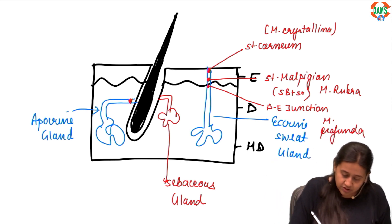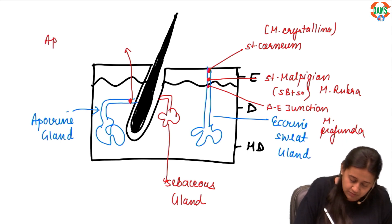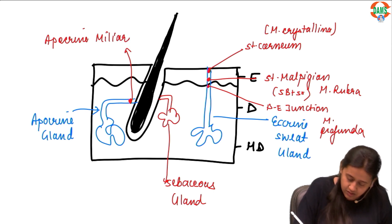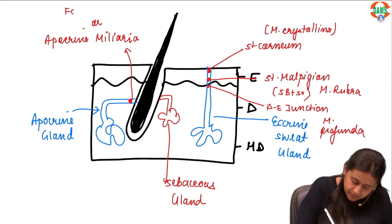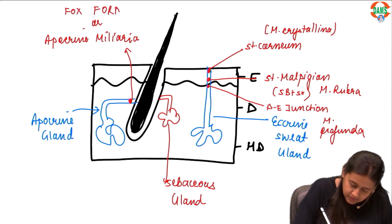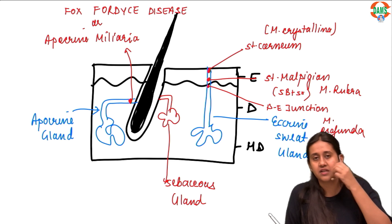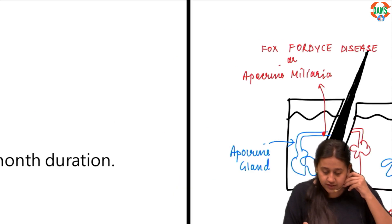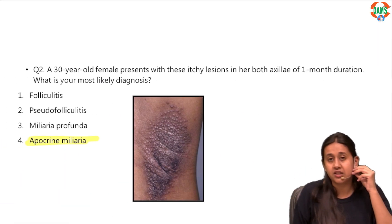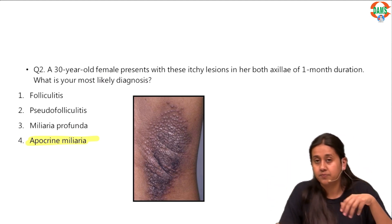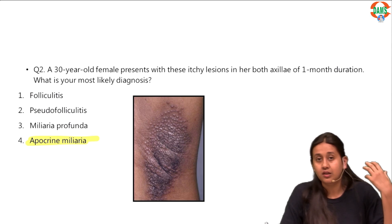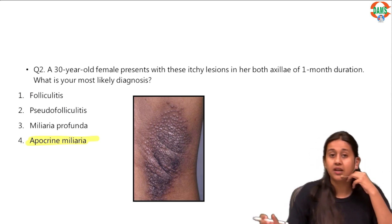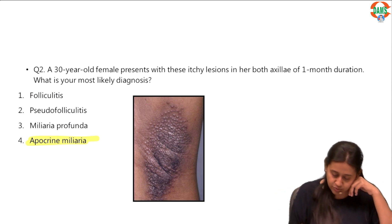The obstruction which occurs in the apocrine gland is known as apocrine miliaria or Fox-Fordyce disease — that is the obstruction which occurs to the apocrine gland duct. The clinical feature of Fox-Fordyce disease: it usually occurs in females, presenting with itchy papular lesions on the axilla; it can also be on the groin or inframammary area. That is how a patient of apocrine miliaria or Fox-Fordyce disease presents. The answer is option number 4.